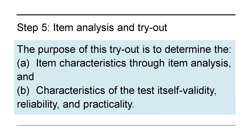Step 5 is item analysis and tryout. The test draft is tried out to a group of pupils or students. The purpose of this tryout is to determine, first, the item characteristics through item analysis, and second, the characteristics of the test itself — like validity, reliability, and practicality. From that tryout, you should be able to do item analysis, which will be part of our next chapter discussion, and consider validity, reliability, and practicality of the test. This is the step that is often missed in classroom testing because we don't have enough time to do it.